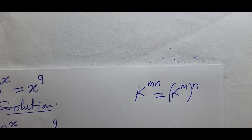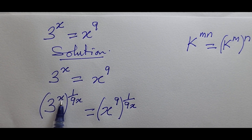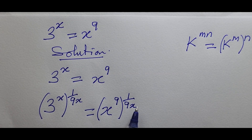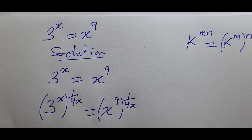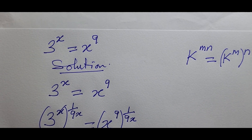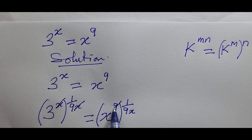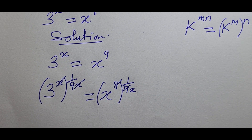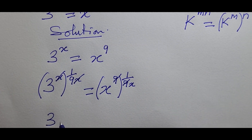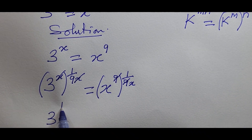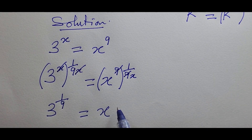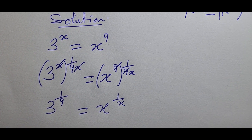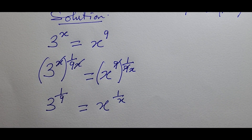Opening up the exponents and multiplying them out: the x on the left cancels with the x in 9x, and the nine on the right cancels with the nine in 9x. We are left with 3^(1/9) on the left and x^(1/x) on the right. Since we are looking for x, let's move to the left-hand side, giving us x^(1/x) = 3^(1/9).